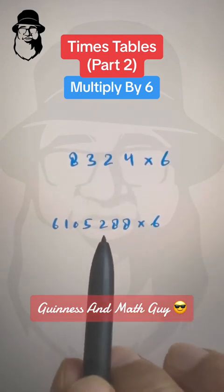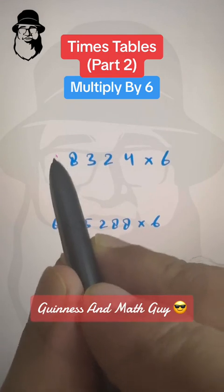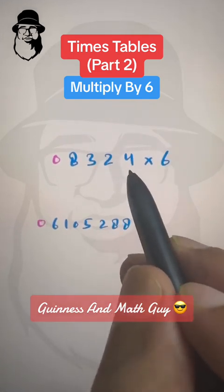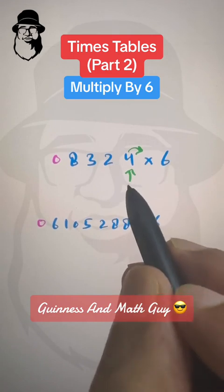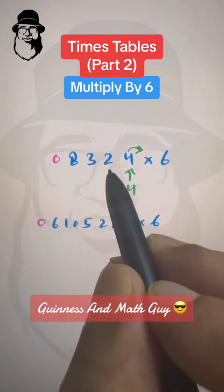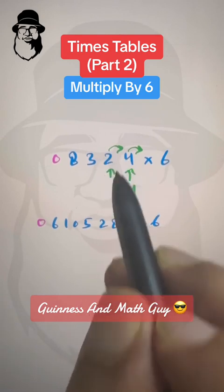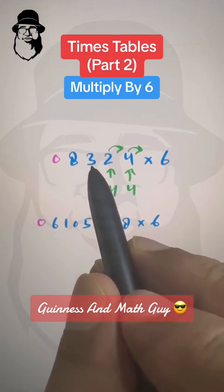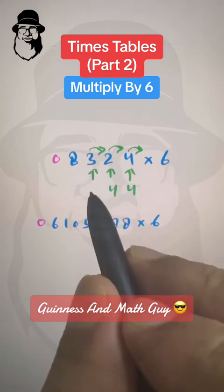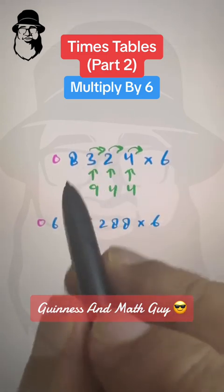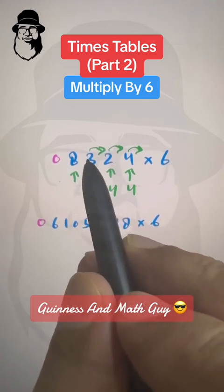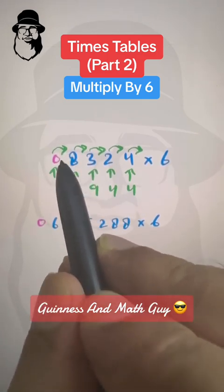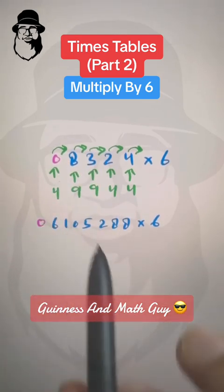Pause the video and try these two practice problems, then we will do them together. We start at 4: 4 plus half of 0 is still 4. Then at 2: 2 plus half of 4 is 2, so 2 plus 2 is 4. Then we see 3 — it's odd, so right away add 5 to make it 8. 8 plus half of 2 is 1, so 8 plus 1 is 9. We write 9. Then at 8: 8 plus half of 3 is 1, so 8 plus 1 is 9. We write 9. Then: 0 plus half of 8 is 4, so 0 plus 4 is 4. Our final answer is 49,944.